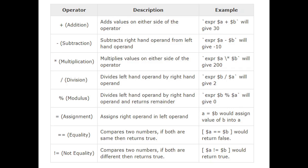We already studied arithmetic operators in other programming languages — the same operators are also supported in Unix/Linux programming. These include the addition operator using the plus symbol, subtraction using minus, multiplication, division, modulus, assignment operator, equality operator, and not-equal operator. Let's see how to use these operators in Unix/Linux programming.